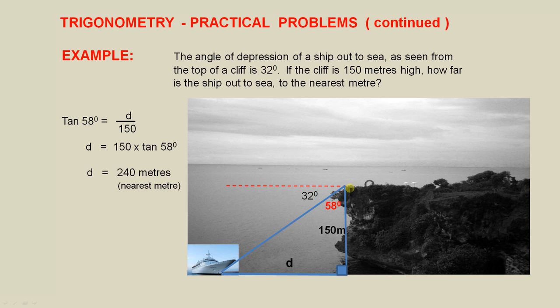Here's the top of the cliff. The cliff is 150 metres high. d is the distance of the ship out to sea. Here we have the angle of depression, 32 degrees. Now note, that angle there, there and there, that's 90 degrees. So this must be 58.